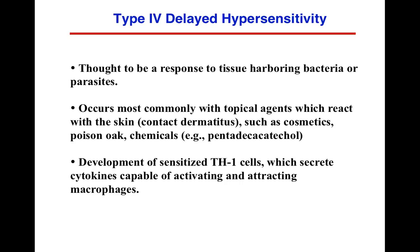Now let's move on to Type 4 hypersensitivity, referred to as delayed hypersensitivity — it takes longer to occur than Types 1, 2, or 3. This is thought to be a response to harmful bacteria in the tissues or tissue spaces. It occurs most commonly with topical agents that react with the skin, such as contact dermatitis from cosmetics, poison ivy, poison oak, and various chemicals. Development of sensitized TH1 cells occurs, which secrete cytokines capable of activating and attracting macrophages.